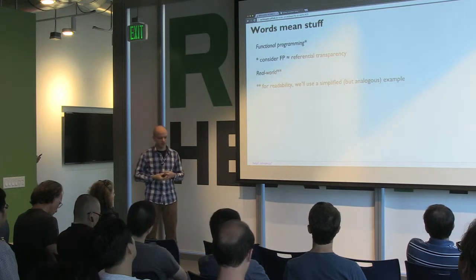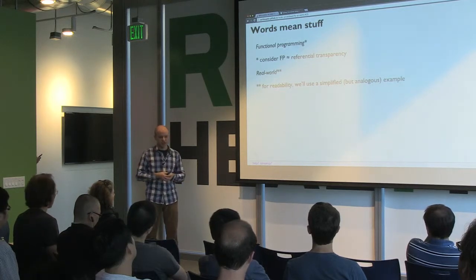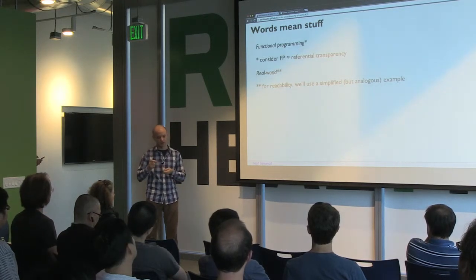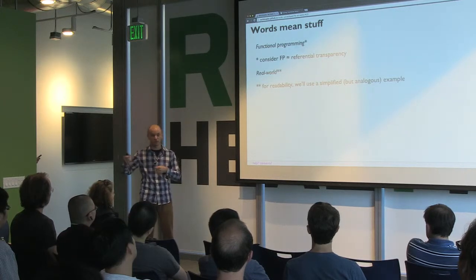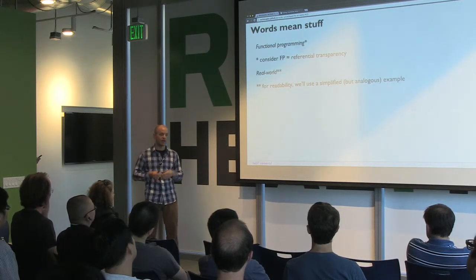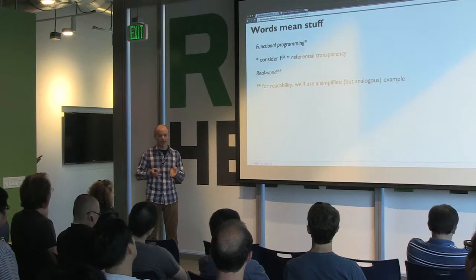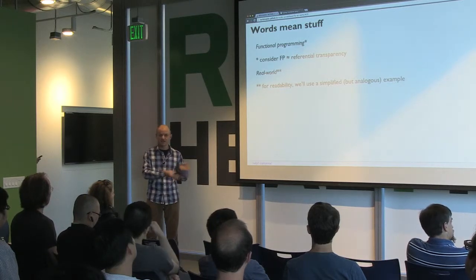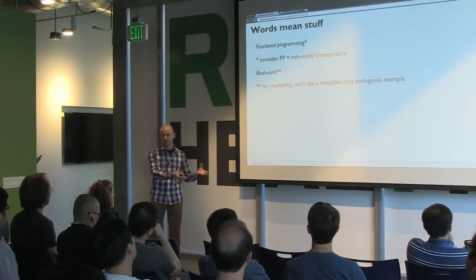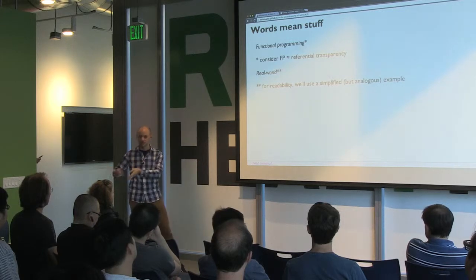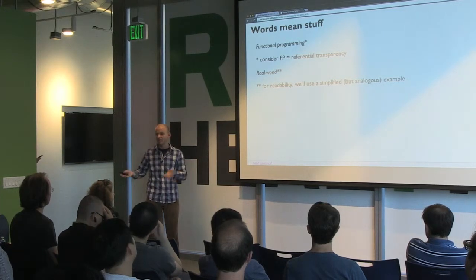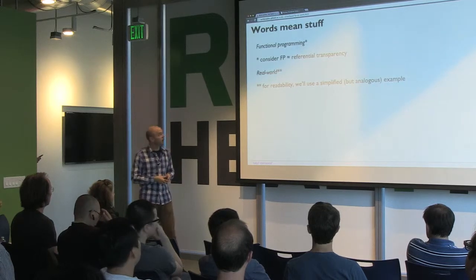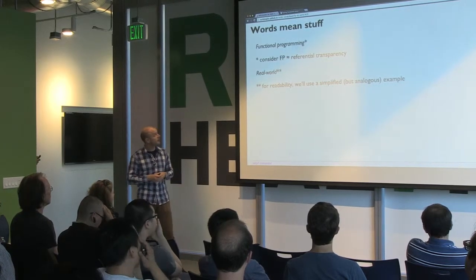Where this starts to be useful: if you had val a equals println("hello world") 1 plus 2, that goes away because referencing a has this side effect where we're printing to the screen and then returning the result of 1 plus 2 — and that's of course not equivalent to just saying 1 plus 2. We'll get into that in a little bit.